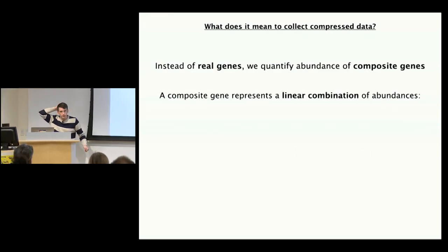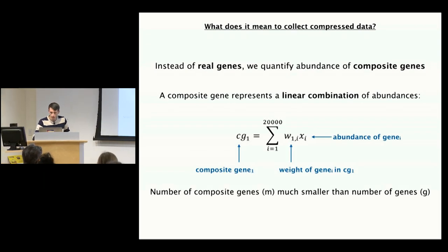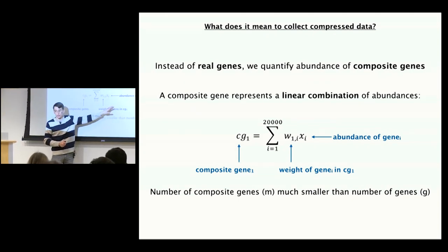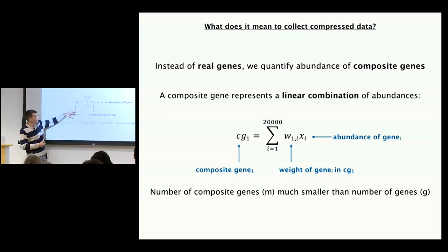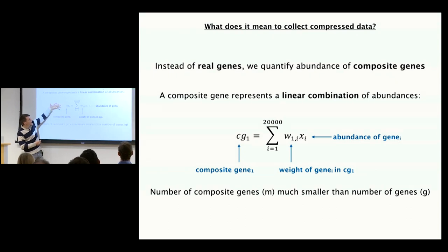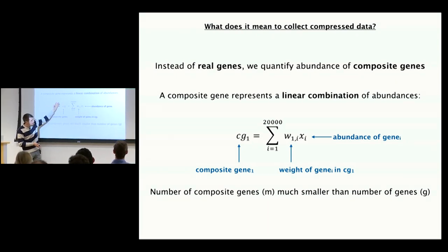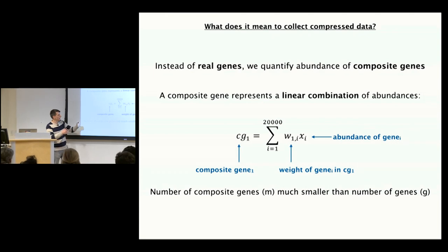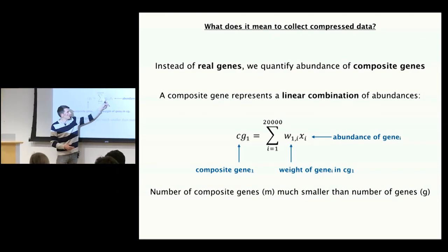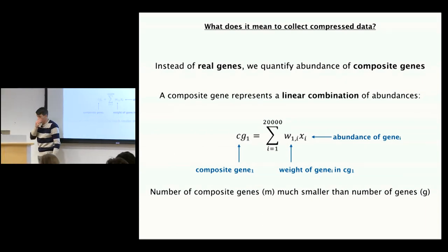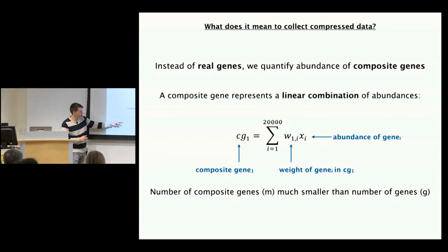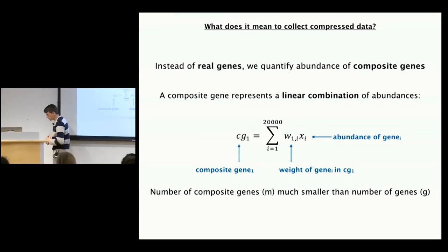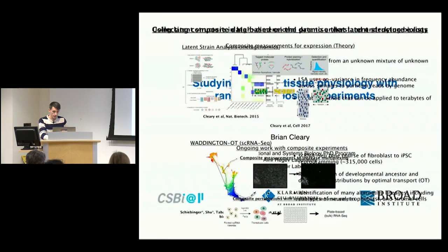Now, what does it actually mean to collect compressed data? Mathematically, we want to capture a measurement that represents a linear combination of gene abundances. Composite measurement number one mathematically represents some weighted sum of all 20,000 genes, and a second composite measurement uses a different weighted sum. The number of such composite genes we collect is much smaller than the total number of genes.